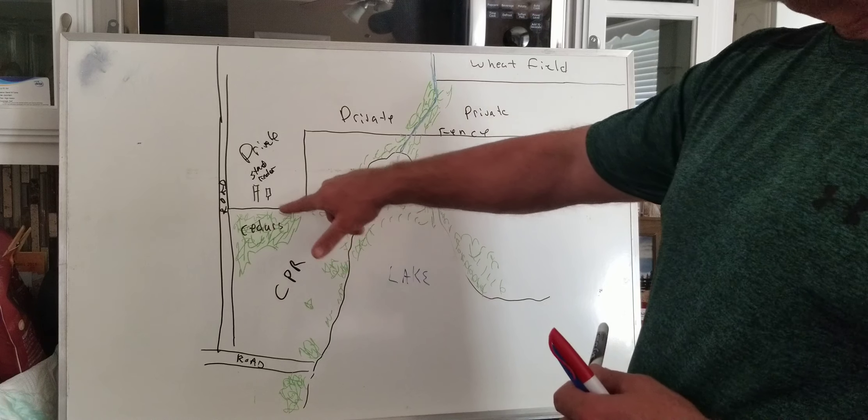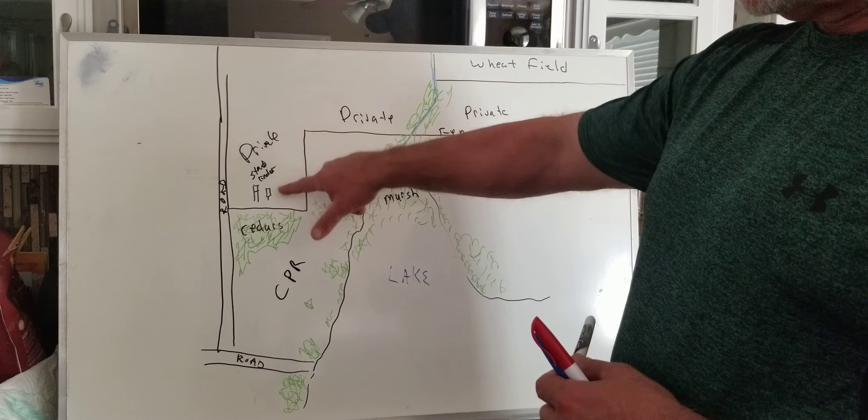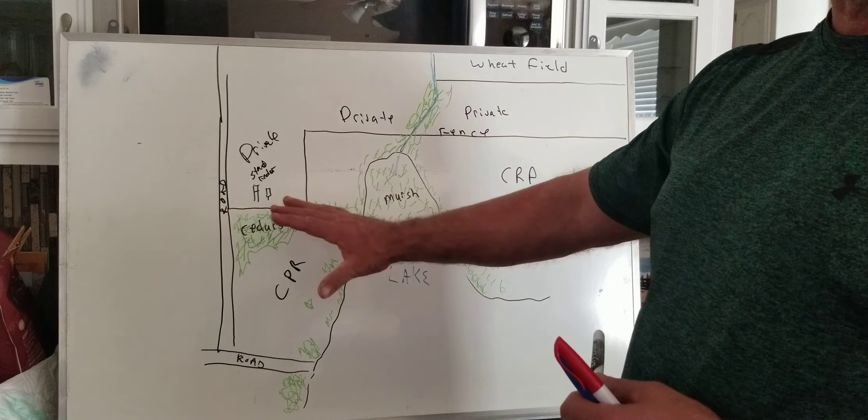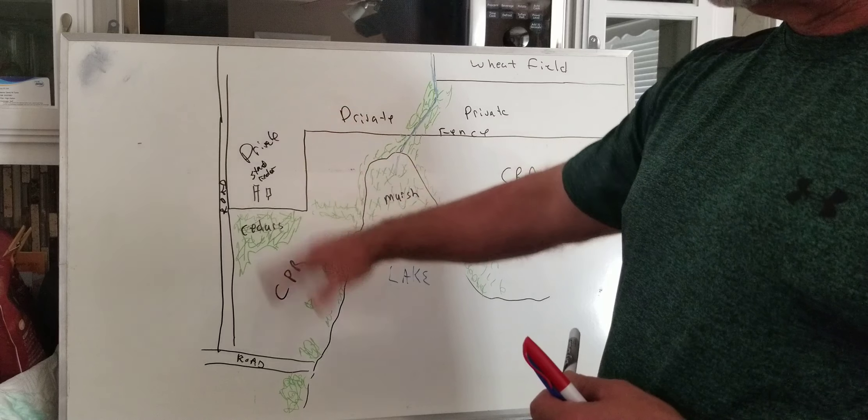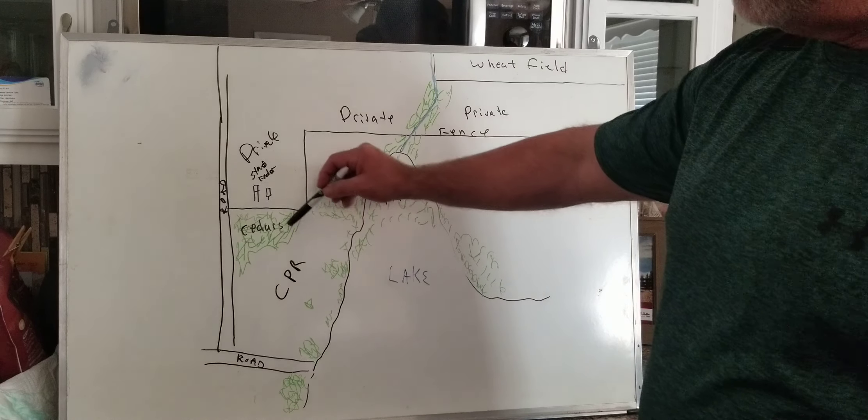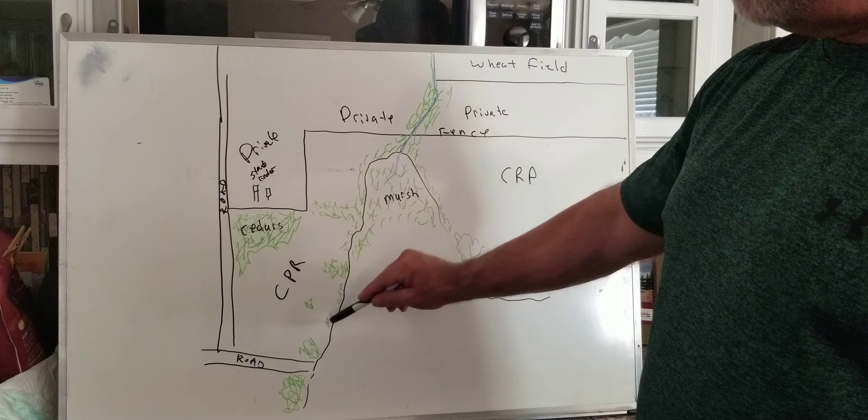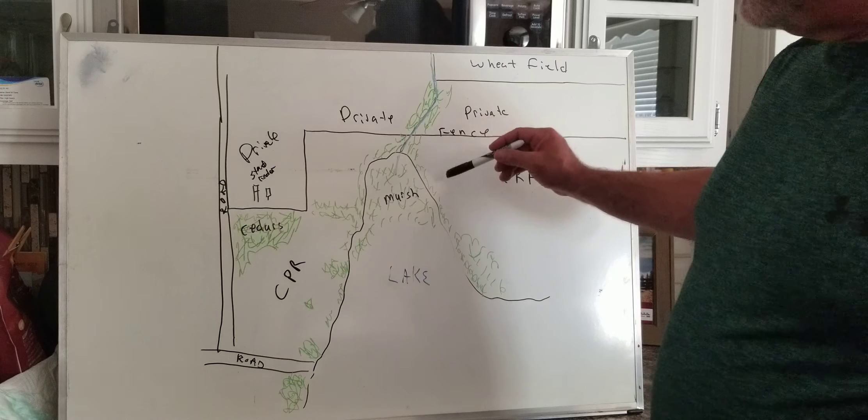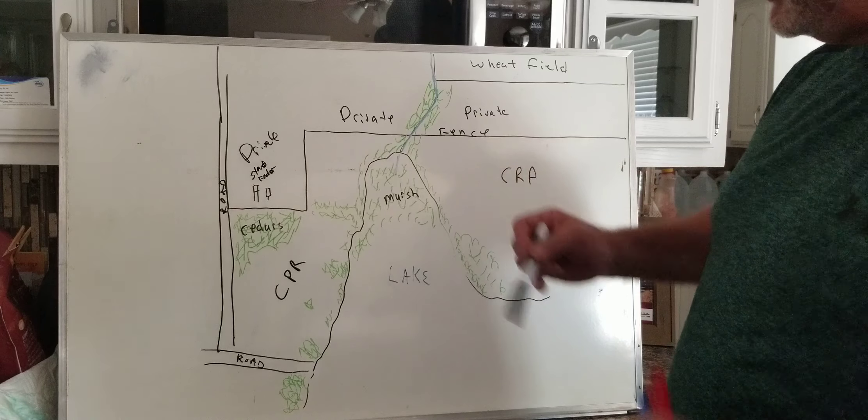About three years ago, this got leased out and some guy put a stand and a feeder right next to that fence line. Since that time, the mature bucks have completely abandoned that. They've kind of moved into these little pockets of willows and stuff along the lake. And then on this other side of the marsh, right about in here is a high spot.